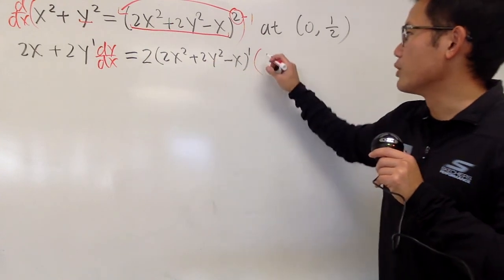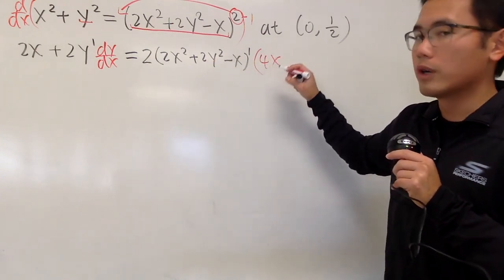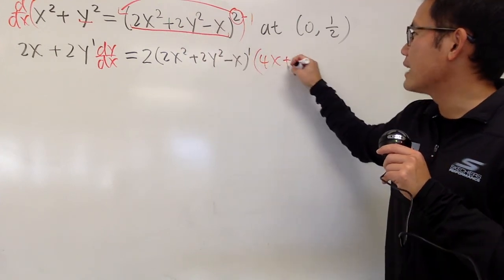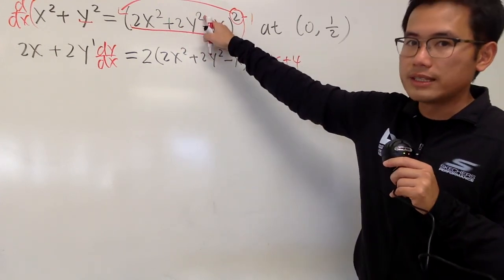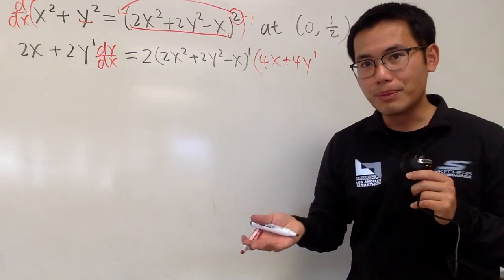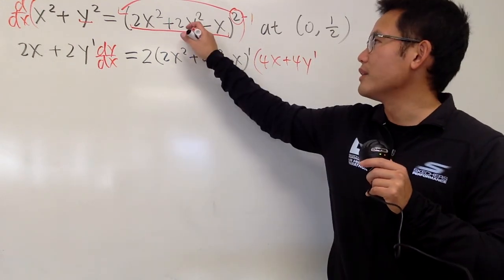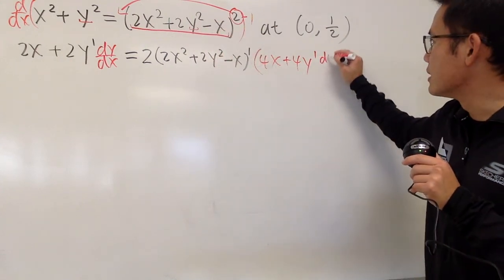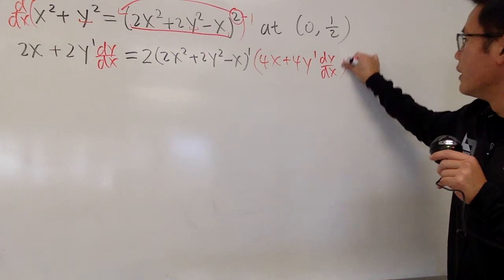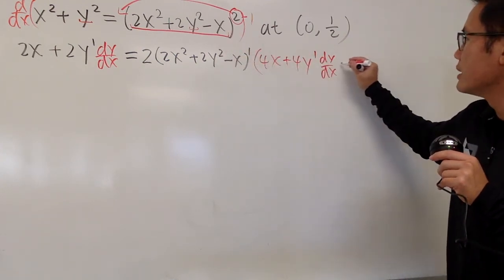The derivative of this term is going to give us 4x to the first power, and then, the derivative of this, bring the 2 to the front, so we add the 4, and then don't forget, subtract 1, so we have y to the first power. But, again, multiply by the derivative of y, right here. So, that's going to give us the dy dx. And, the derivative of negative x, at the end, right here, is minus 1.